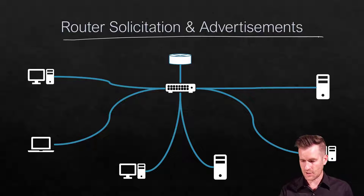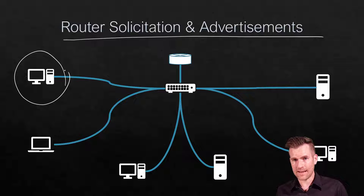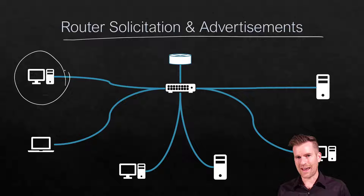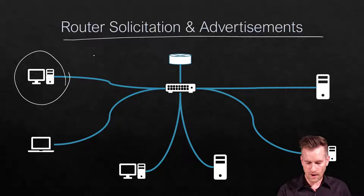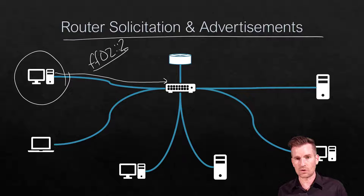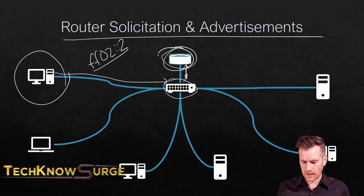When it comes to router solicitation and advertisement, that is a machine asking a question from a router. To ask a question from routers on the network, it uses a multicast address. The multicast address we've already mentioned that addresses all routers on the network is FF02::2. So this machine is going to send out a packet destined for FF02::2, and the switch is going to forward it to any devices subscribed to that multicast group — which would be the router.